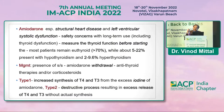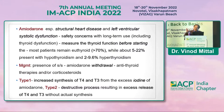When starting amiodarone, baseline thyroid function tests are always advisable. Approximately 70–75% of patients remain euthyroid, but 20–25% may develop hypothyroidism or hyperthyroidism. Management involves withdrawal of amiodarone if needed, antithyroid treatment, and sometimes steroids.